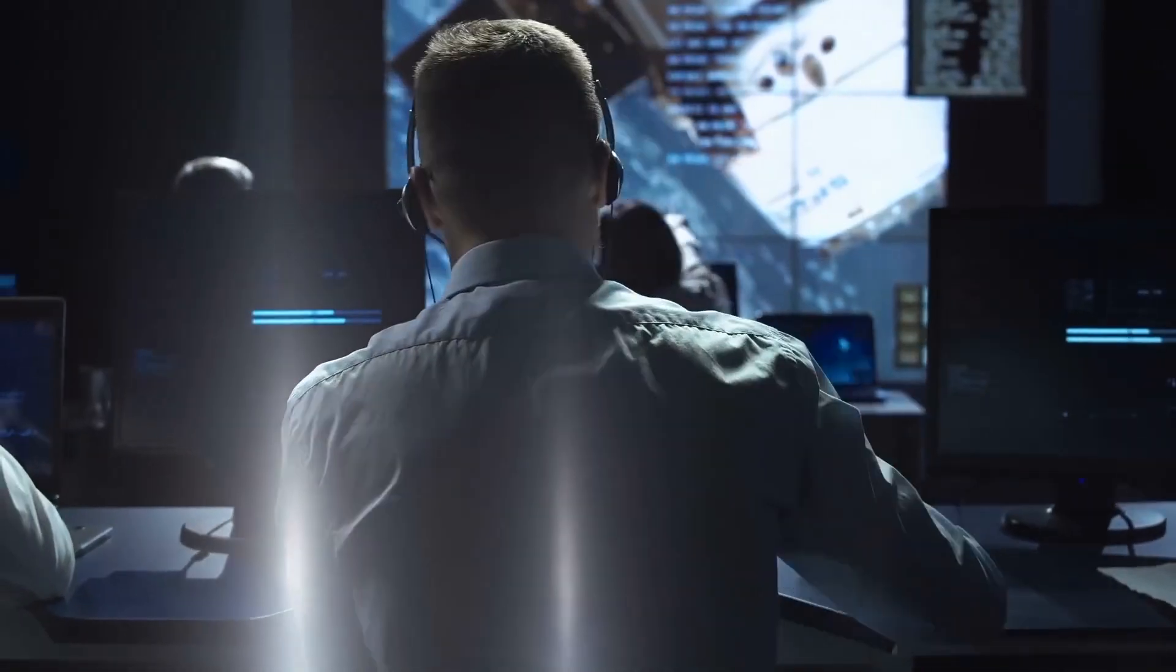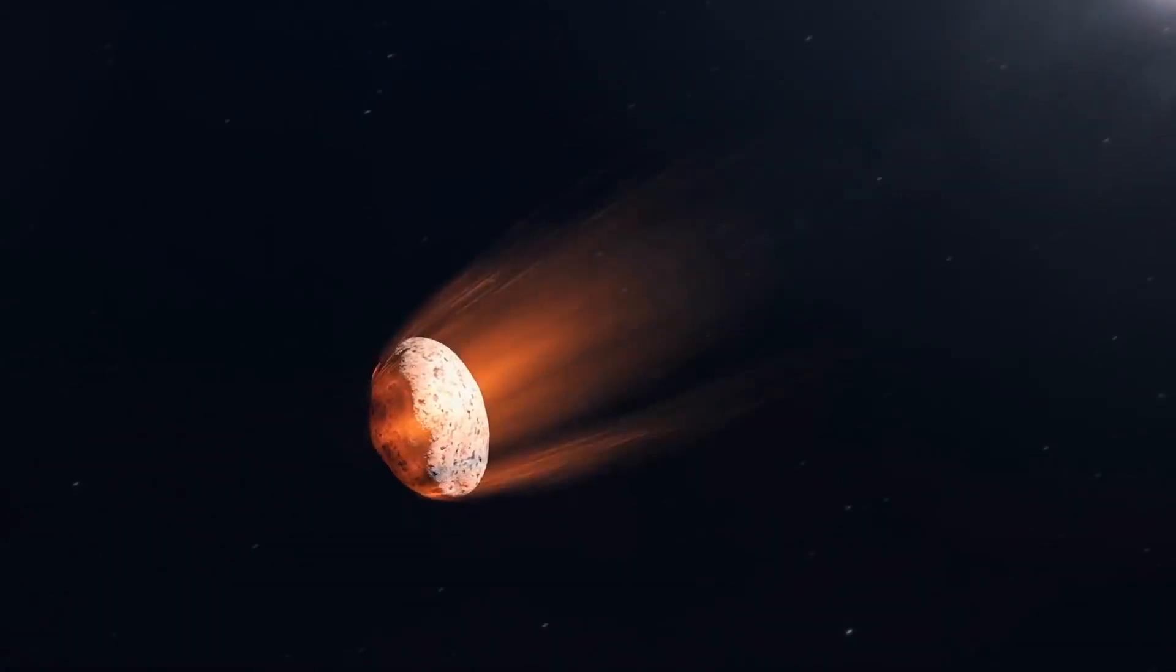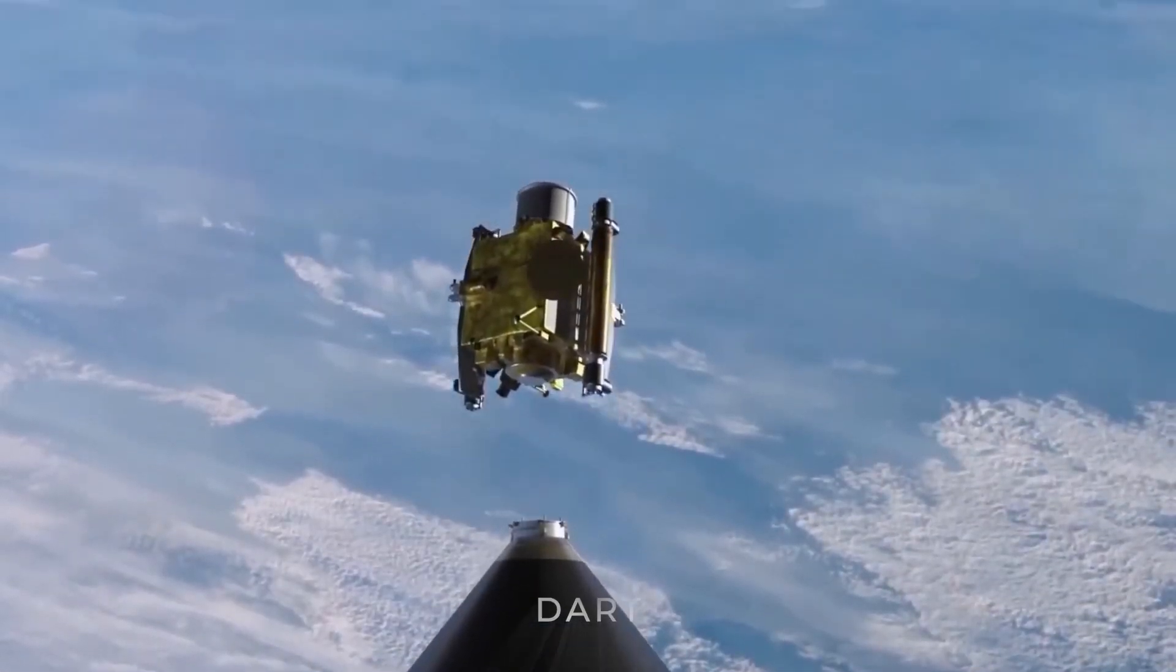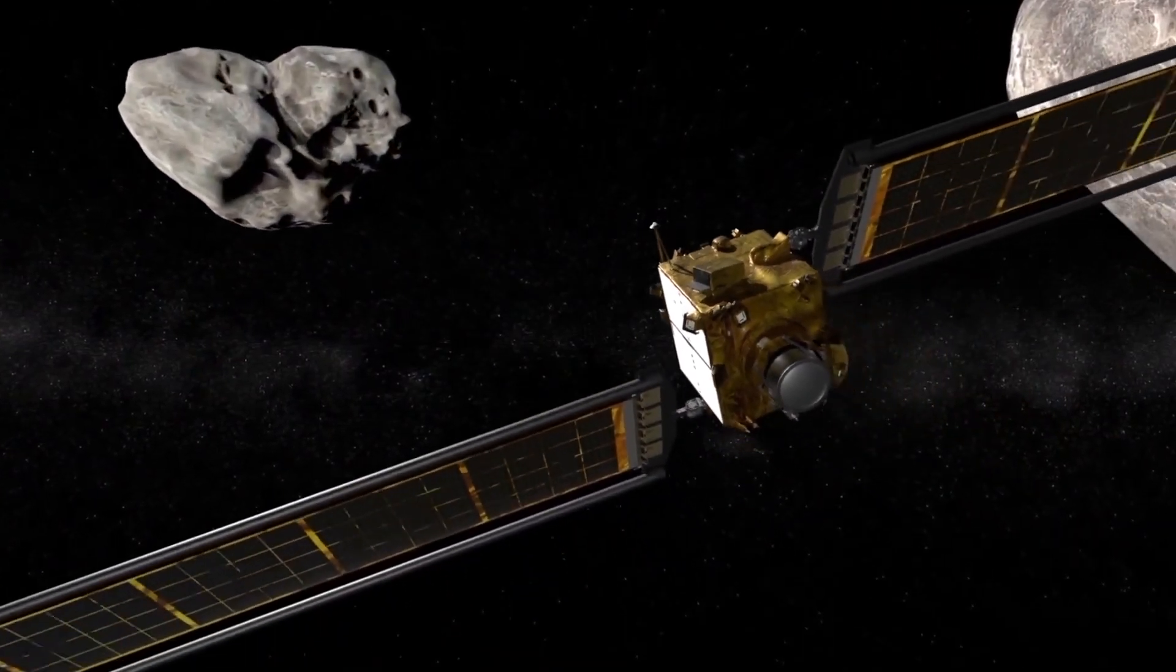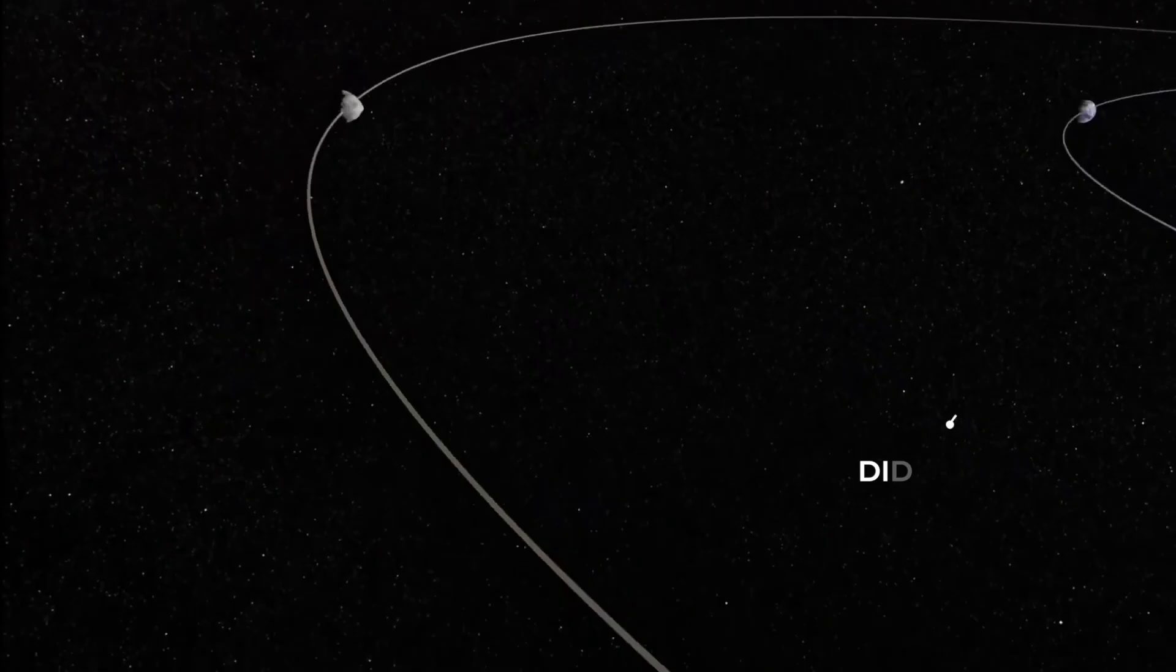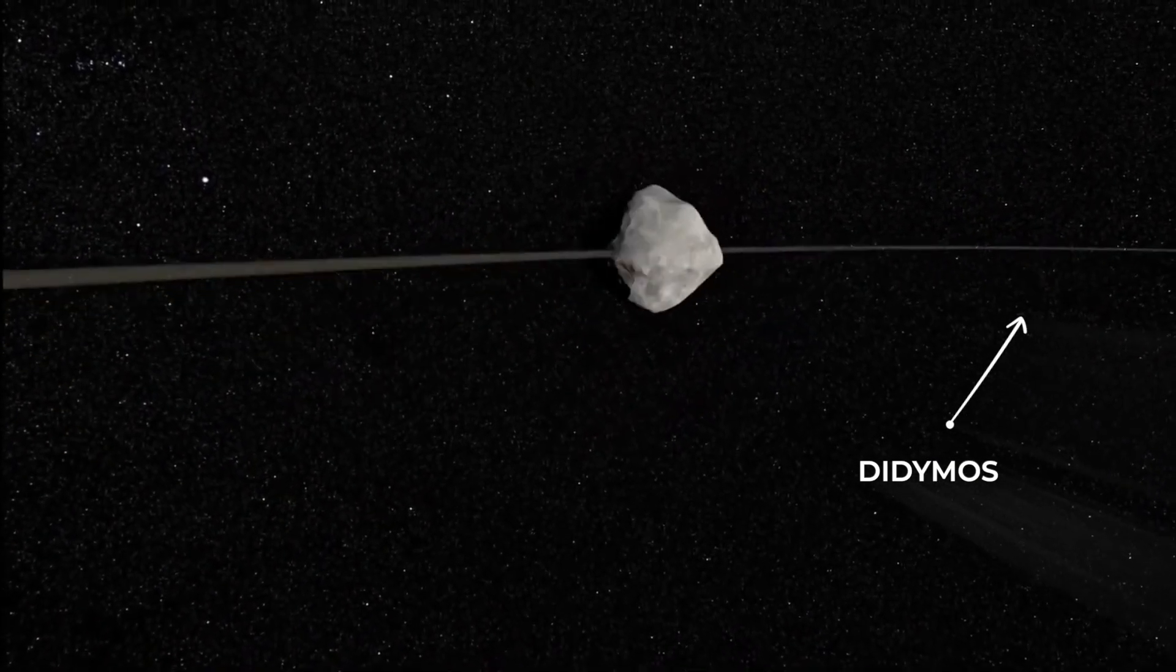This year, NASA has launched a new project to tackle this possible threat. The Double Asteroid Redirect Test, or DART, is a spacecraft designed to see if asteroids can have an impact on the trajectory of an incoming asteroid. The craft will travel to a small moon orbiting the nearby asteroid Didymos.